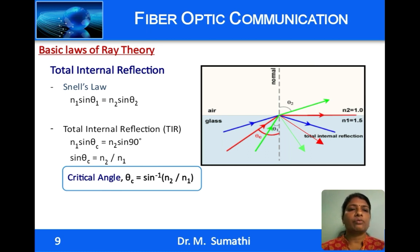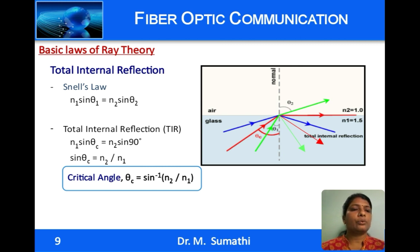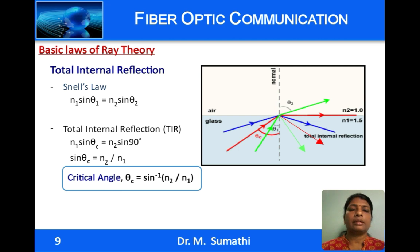Considering total internal reflection: when light travels from a denser medium to a rarer medium and makes an angle of incidence θ greater than or equal to the critical angle at the interface, light is totally internally reflected and there is no refraction. Considering two media of refractive index n1 and n2, angle of incidence θ1 and angle of refraction θ2, according to Snell's law: n1 sin θ1 = n2 sin θ2. For a ray making the critical angle θc, the angle of refraction is 90°. Substituting: n1 sin θc = n2 sin 90° = n2, so sin θc = n2/n1 and θc = sin⁻¹(n2/n1).